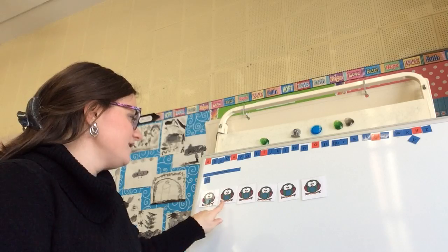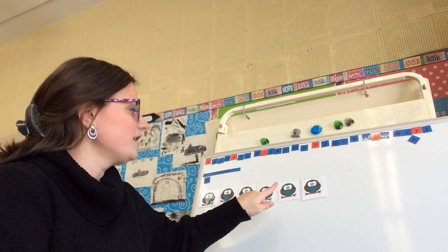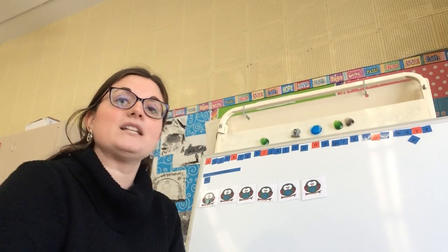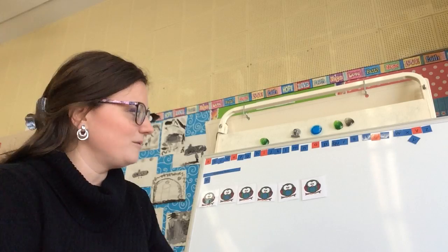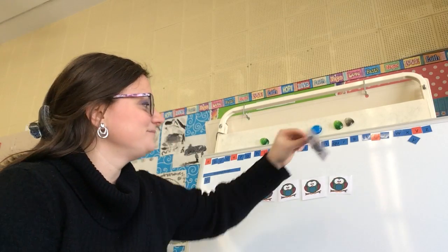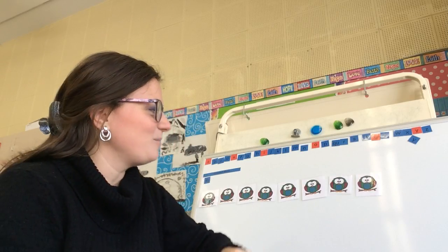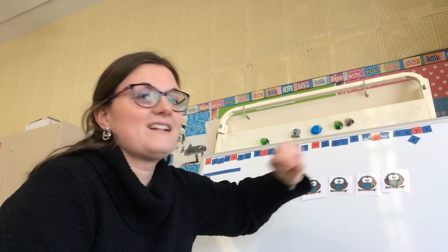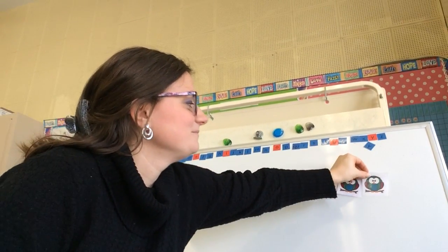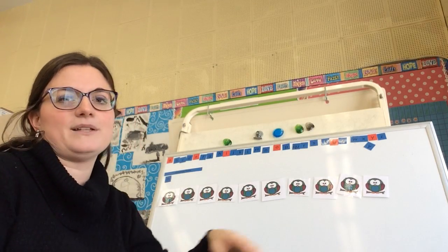So we have one — say it out loud with me — two, three, four, five, and six. Now I'm going to add an owl, and I want you to say how many I have now. Seven, eight — I hope you're counting with me — nine, ten. So we now have ten owls.